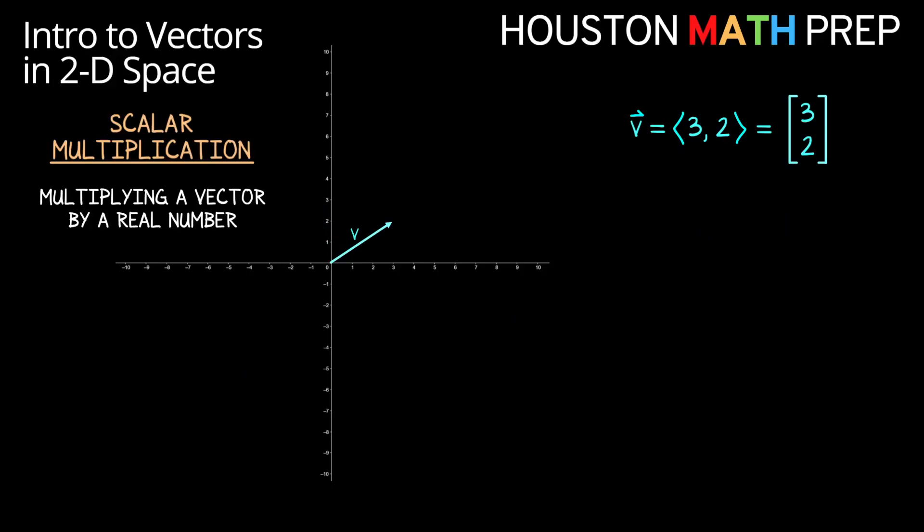Let's move now beyond addition to our first kind of multiplication with vectors, scalar multiplication. And I say our first kind of multiplication because there are actually a few different ways to multiply with vectors. Scalar multiplication is the idea of multiplying a vector by a real number.